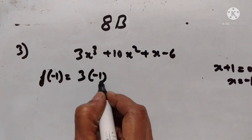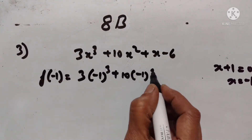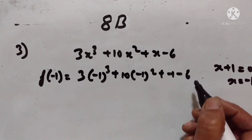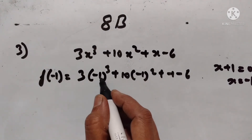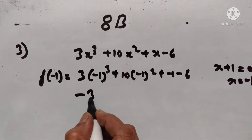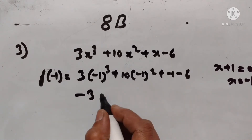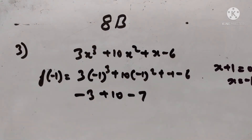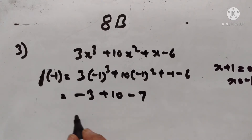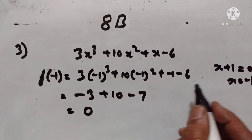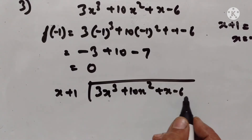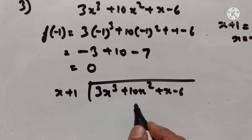f(-1) = 3(-1)³ + 10(-1)² + (-1) - 6. Now, (-1)³ = -1, so 3 × (-1) = -3. (-1)² = 1, so 10 × 1 = 10. Then -1 - 6 = -7. So -3 + 10 - 7 = 0. Minus 10 plus 10 is equal to 0. Therefore, x + 1 is a factor of this expression. Let us divide 3x³ + 10x² + x - 6 by x + 1 and find the other two factors.